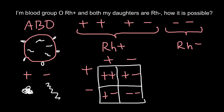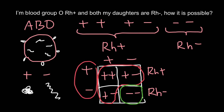According to the Punnett square, the progeny would be: positive/positive, positive/negative, positive/negative, and negative/negative. Three quarters of the progeny we can expect to be RH positive, and one quarter we can expect to be RH negative — even when both parents are RH positive. So don't think about infidelity here; it is entirely possible that two RH positive parents may have an RH negative child.